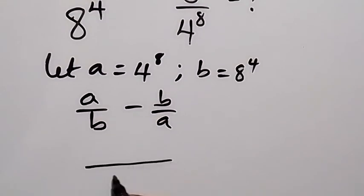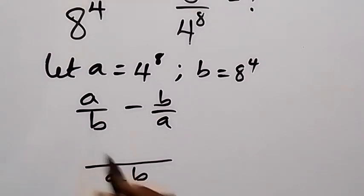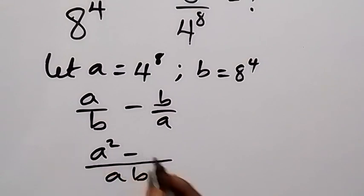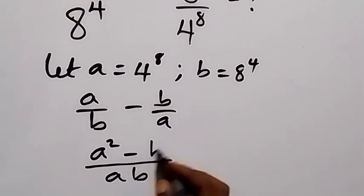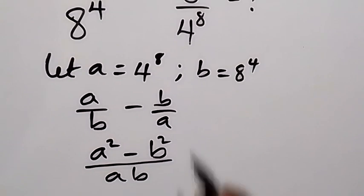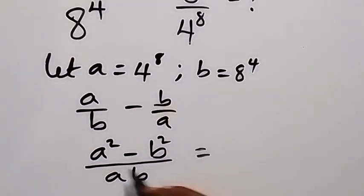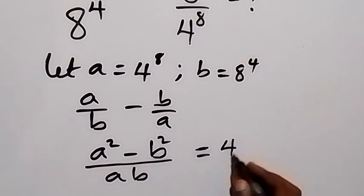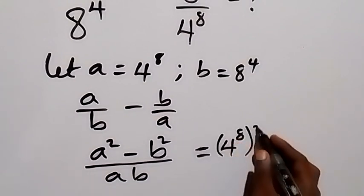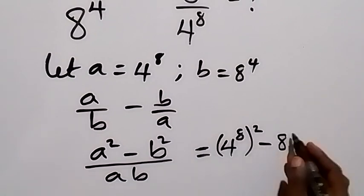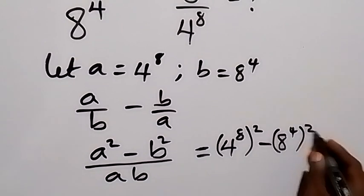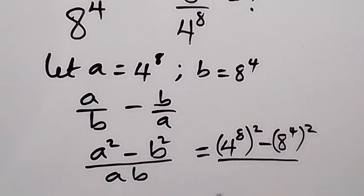So LCM here is ab. b goes here: b cancels b, leaving a; a times a gives a squared. Then minus: a goes here, a cancels a, leaving b; b times b gives b squared. Then we substitute our a and b back, and this becomes a squared — that's 4 raised to power 8 then squared — minus b squared — that's 8 raised to power 4 then squared — divided by a times b, that's 4 raised to power 8 times 8 raised to power 4.